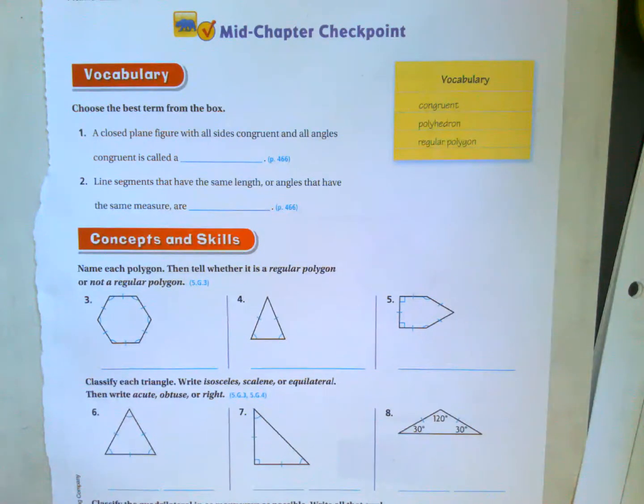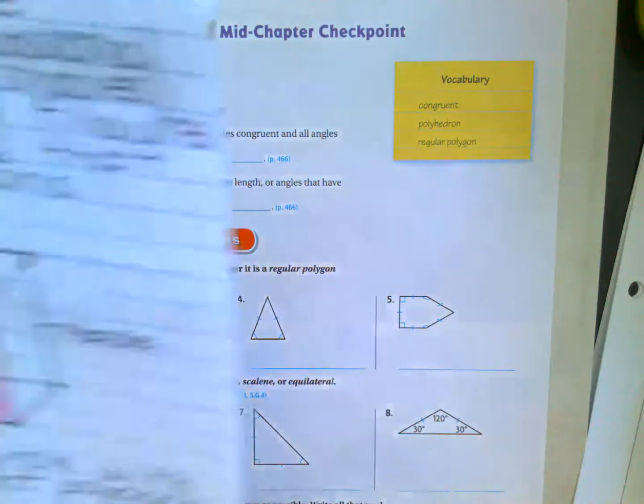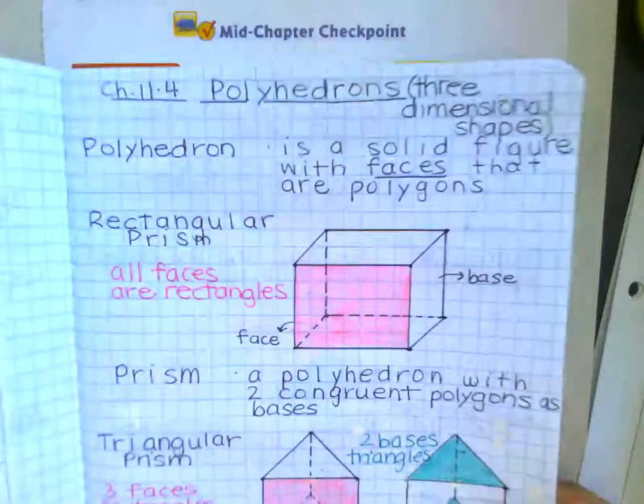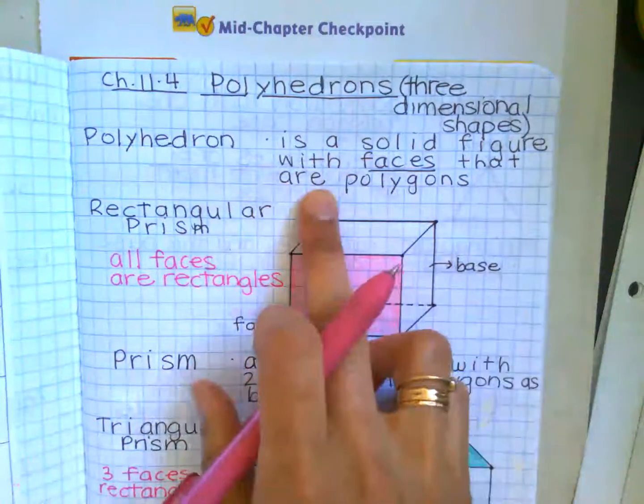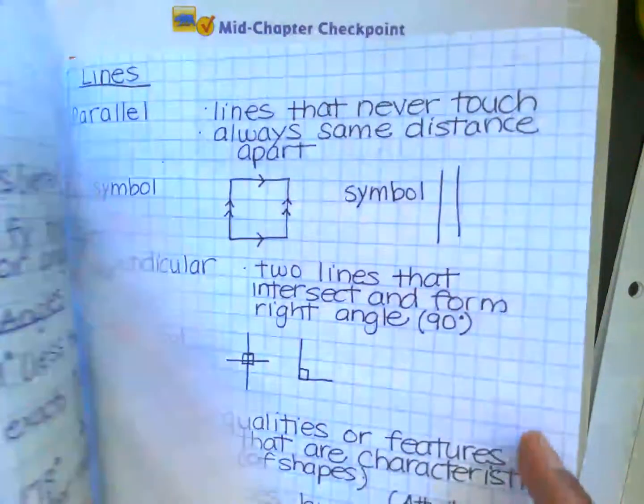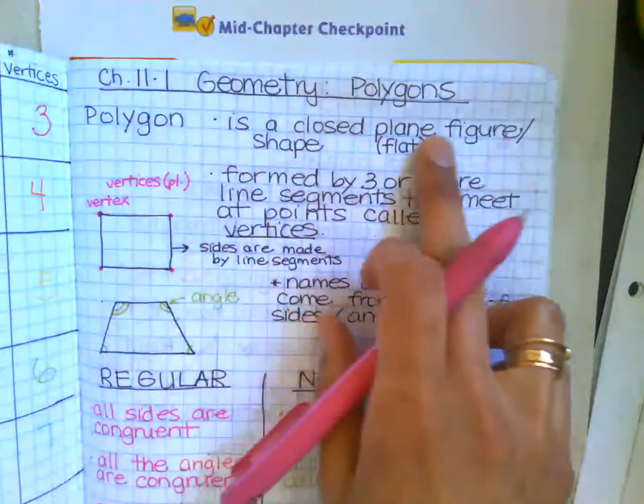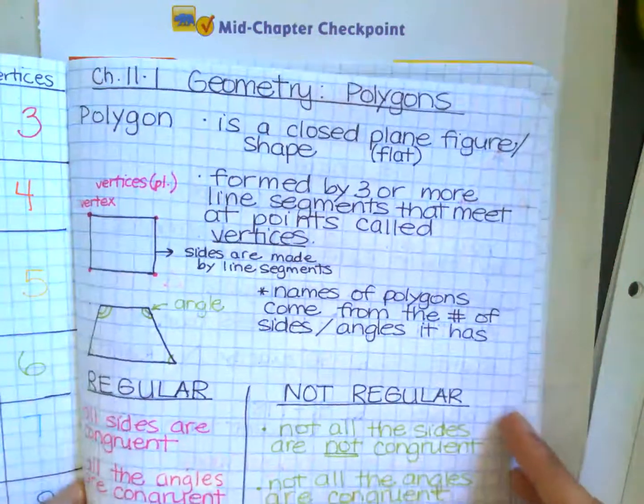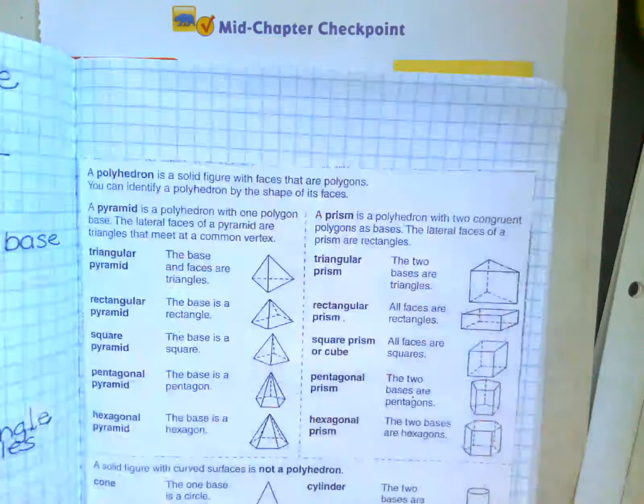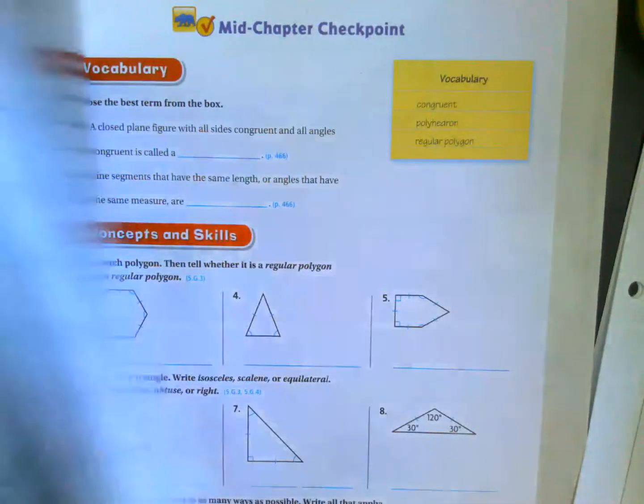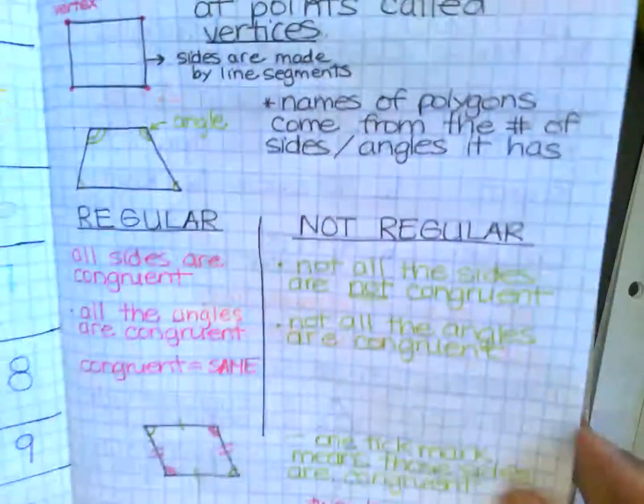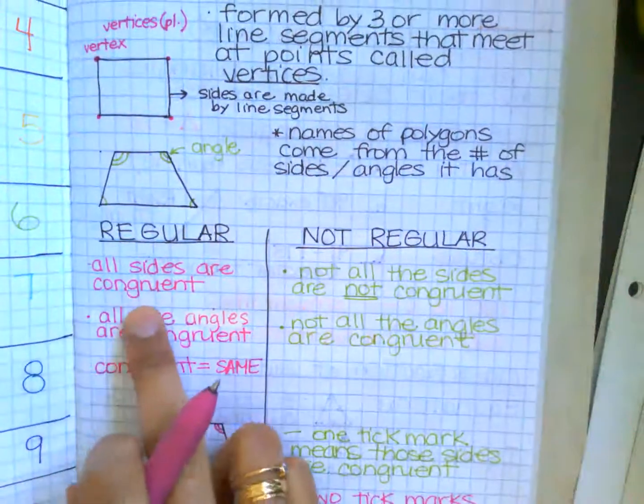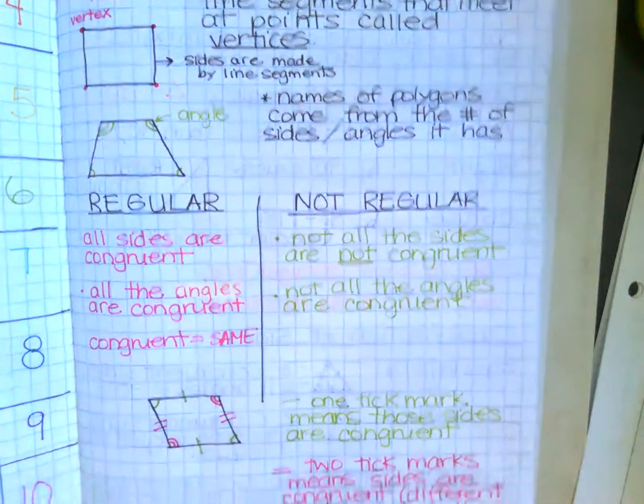So we know from our notes, just to use those three words, a polyhedron is a solid figure with faces that are polygons. A polygon is a closed plane shaped figure, and congruent means all sides are congruent, meaning the same.